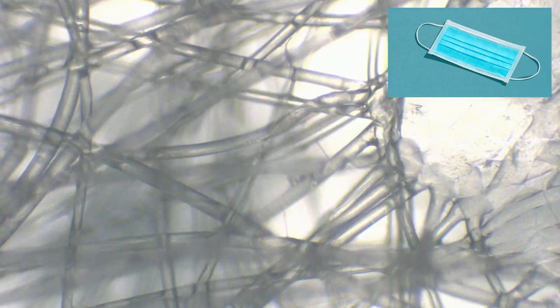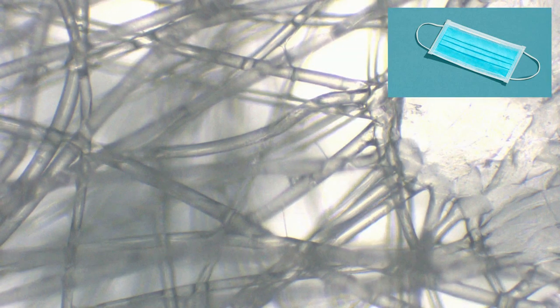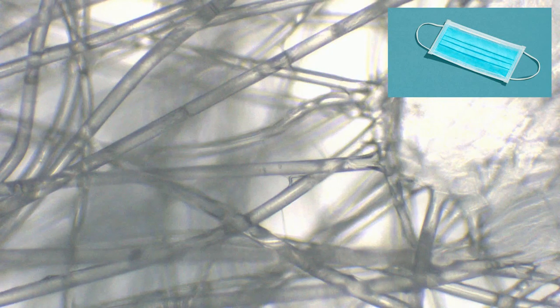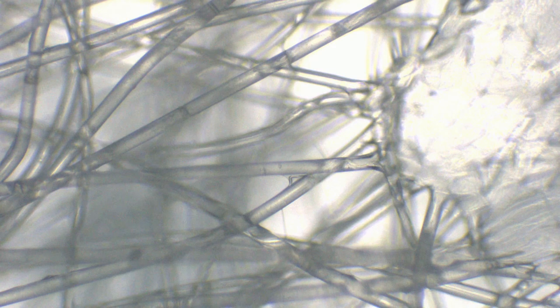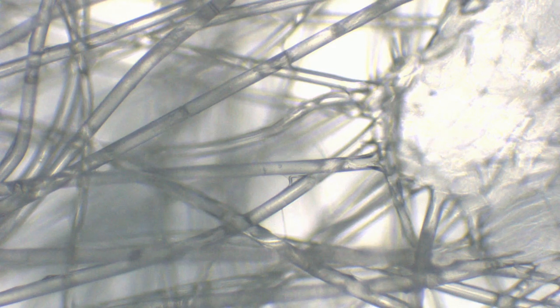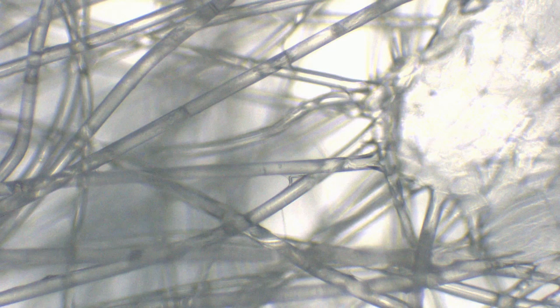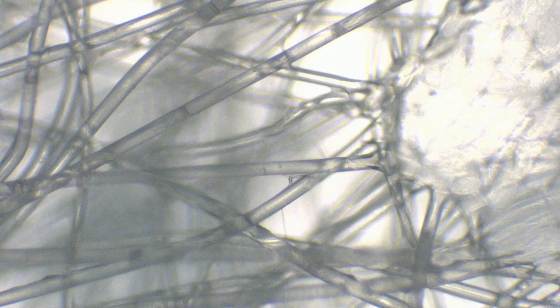The fibers make a mesh network. The particle size that can be stopped is around 5 micron to 10 micron. You can see the varied dimensions of the network. At some places it is wide and closer, at some places it is wide open.